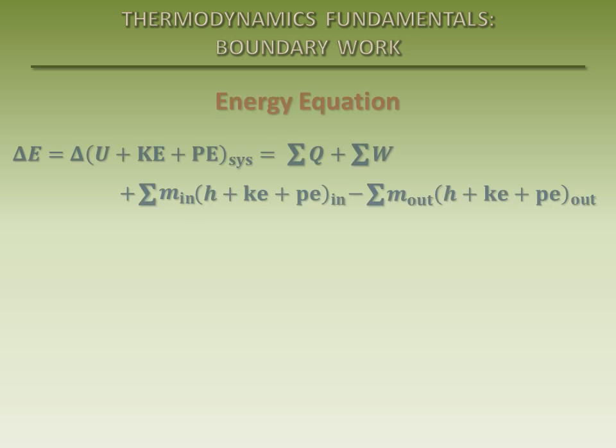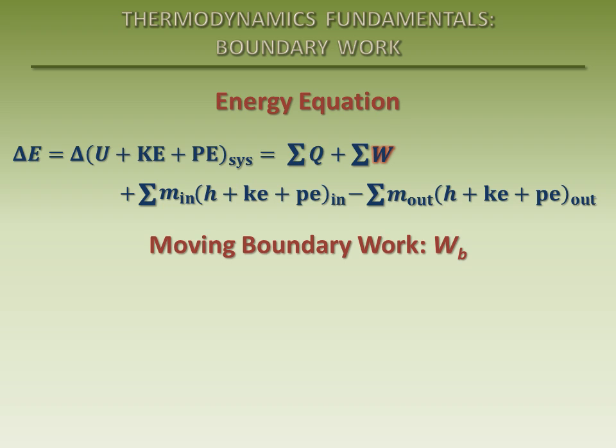The mathematical expression for the first law of thermodynamics, or the energy equation, includes a term which accounts for any work performed on or by the system during a process. One common form of work done in piston-cylinder devices is called moving boundary work, or simply boundary work.